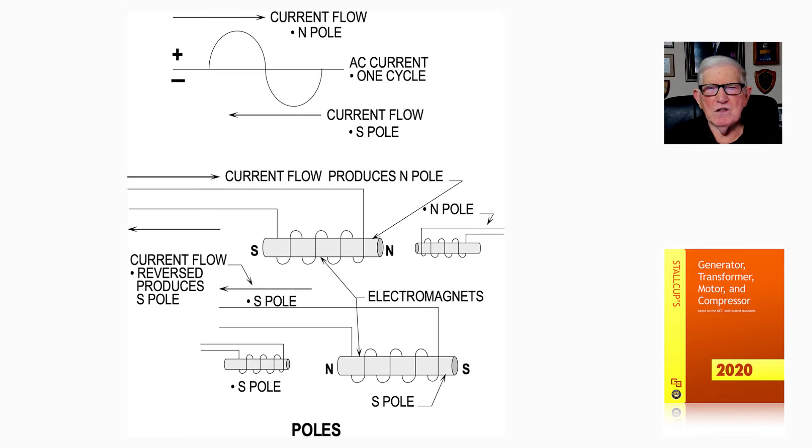Current flow produces a north pole as you see here. In the electromagnet, these turns could be lap or wave - we'll get into that later in the book - but we have a north pole.